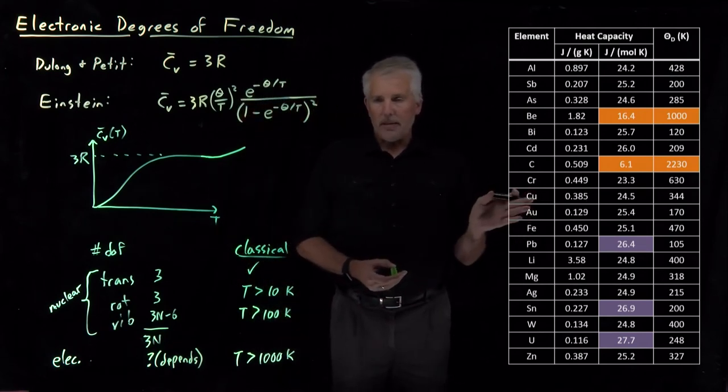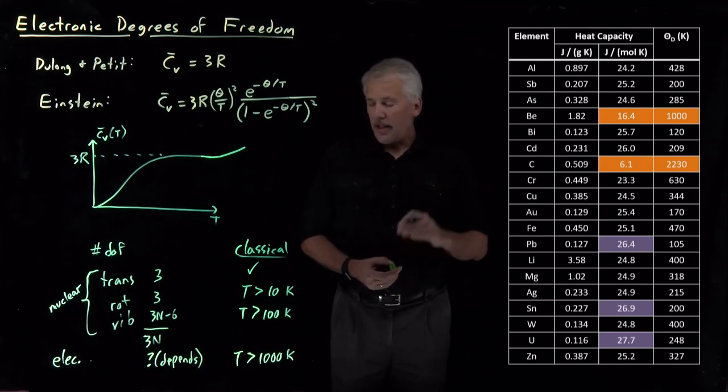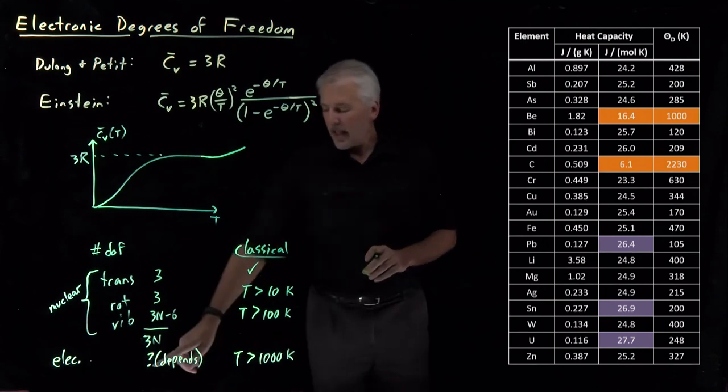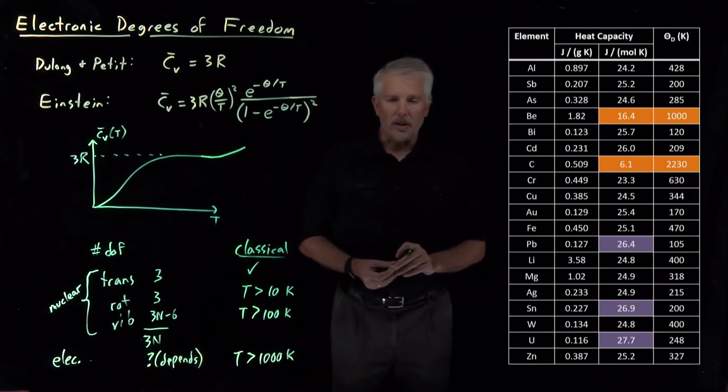Maybe each of these atoms has only one valence electron that has an accessible electronic state, or maybe it has more than one electron. And that'll depend on the details of the metal or the solid that we're talking about.